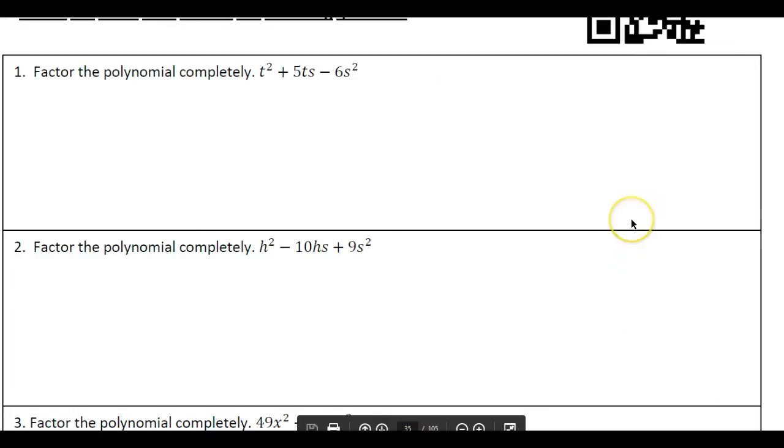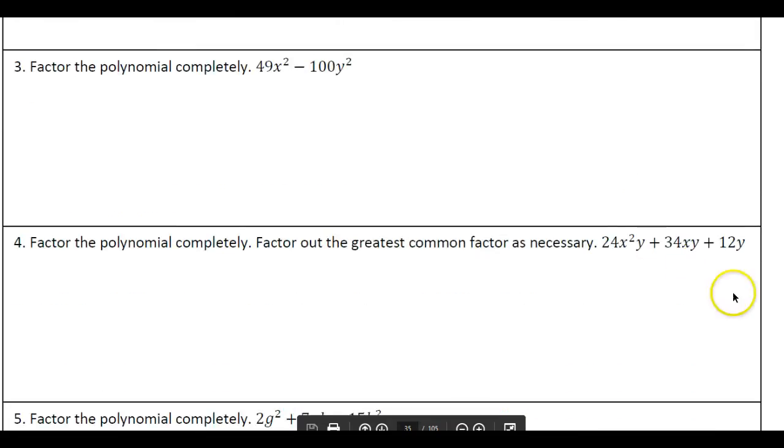All right, continuing. Now if you recognize this one, this is a good shortcut. This is a perfect square, and this is a perfect square. And it's the difference. So this will factor into its conjugates. Let me give you a moment. 7x plus 10y, 7x minus 10y.